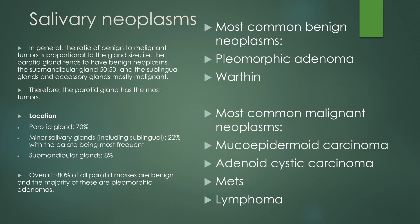Salivary neoplasms tend to be benign, and this ratio is proportional to the gland size. The parotid gland, being the larger salivary gland, tends to have benign neoplasms. The submandibular gland is more of a 50-50. The sublingual glands and the accessory glands, if they have a lesion, it tends to be more malignant. Statistically, 70% of salivary gland neoplasms are located within the parotid gland, about 22% in the minor salivary glands including sublingual, and about 8% in the submandibular glands. Overall, about 80% of parotid masses are benign, the majority being pleomorphic adenomas. The most common benign neoplasms are pleomorphic adenoma and Warthin's tumor. The most common malignant neoplasms are mucoepidermoid carcinoma, adenoid cystic carcinoma, and metastatic disease to the lymph nodes within and around the parotid gland, especially from cutaneous scalp cancers. There are also lymph nodes in the salivary glands, so you can get lymphoma within the glands as well.